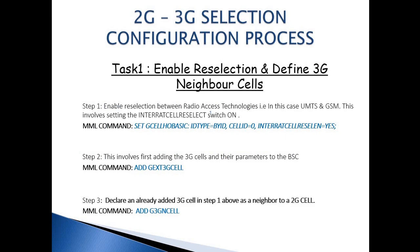Let's look at how we can set this up on our GSM system. First, we need to configure that the 2G cells should allow for inter-RAT cell selection. This is achieved by configuring the SET GCELL command and setting the inter-RAT cell reselect enable to yes. This is done on our BSC. We would also need to add 3G cells to the BSC — the 3G cells that can be selected or handed over to from the 2G cells — by running the command ADD EXTERNAL 3G CELL.